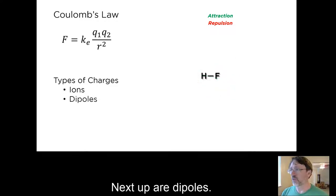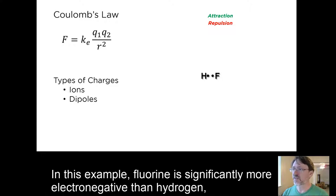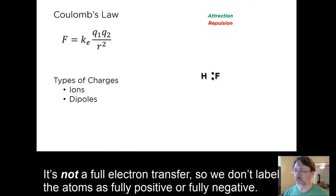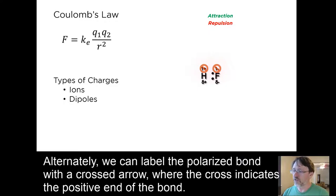Next up are dipoles. In a covalent bond, the electrons will not be shared equally between the two atoms if those atoms have different electronegativities. In this example, fluorine is significantly more electronegative than hydrogen, and so the bonding electrons spend more of their time around the fluorine than they do around the hydrogen. It's not a full electron transfer, so we don't label the atoms fully positive or fully negative. Instead, we label them as partially positive or negative, where the delta means some value less than 1. Alternately, we can label the polarized bond with a crossed arrow, where the cross indicates the positive end of the bond.